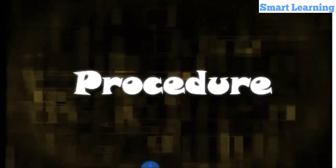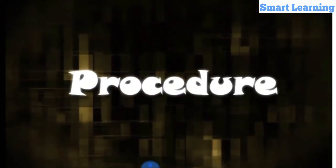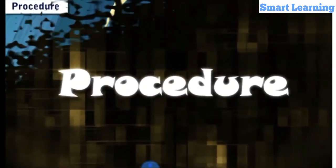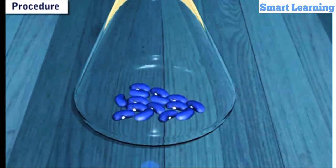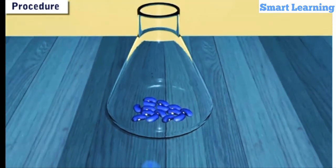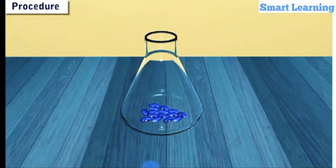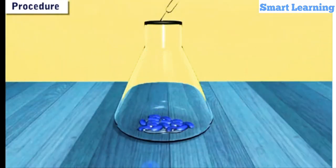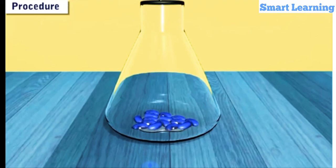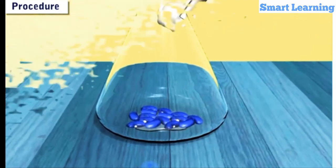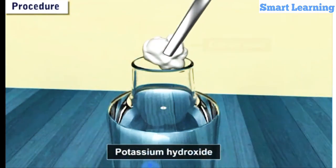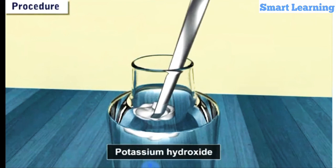Procedure: Take some germinating bean seeds in a conical flask. Sprinkle a few drops of water on the seeds to keep them moist. Dip cotton wool in potassium hydroxide solution.